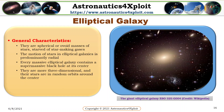Elliptical galaxies are spherical or ellipsoidal masses of stars, starved of star-making gases. The motion of stars in elliptical galaxies is predominantly radial. Every massive elliptical galaxy contains a supermassive black hole at its center. They are more three-dimensional and their stars are in random orbits around the center. This picture shows the giant elliptical galaxy ESO 325-G004.